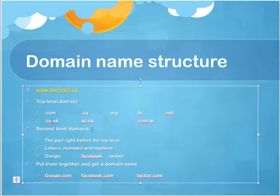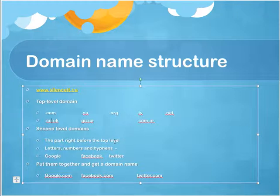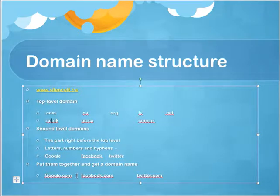Second-level domains are the ones that you can buy and tack on to these top-level domains. It's the part that's right before the top-level. It consists of letters, numbers, and hyphens. Some examples would be Google, Facebook, Twitter. And then if you put them together, obviously you get something like Google.com.